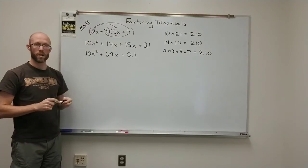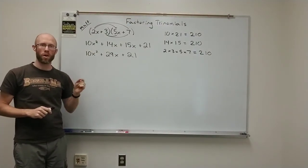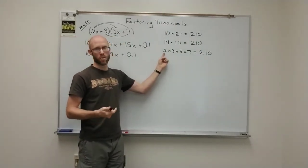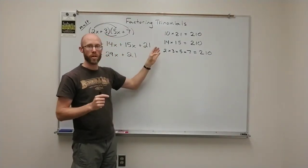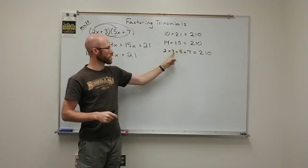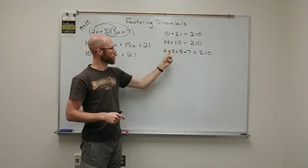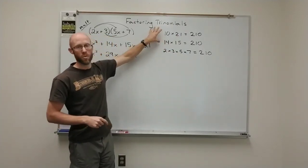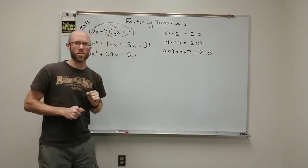The reason they all give you 210 is because in each of those combinations, there is one factor of the original coefficients, right? So here, the original coefficients 2, 3, 5, and 7 appear once in each of these, right? The 14 is a 2 and a 7. The 15 is a 3 and a 5. Here, the 10 is a 2 and a 5. The 21 is a 3 and a 7. And so it's really the same product just with the combination scrambled a little bit.